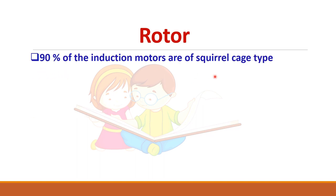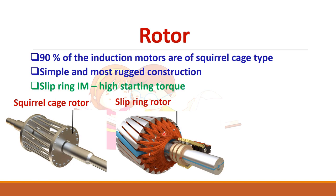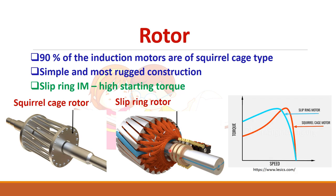90% of induction motors are of squirrel cage type because they have a simple and rugged construction. The construction itself looks like a cage, hence the name. The only drawback is that you cannot increase the starting torque. Slip ring induction motors are preferred where high starting torque is needed — their speed-torque characteristics show a higher starting torque compared to the squirrel cage rotor.